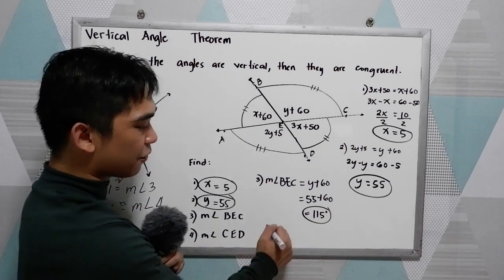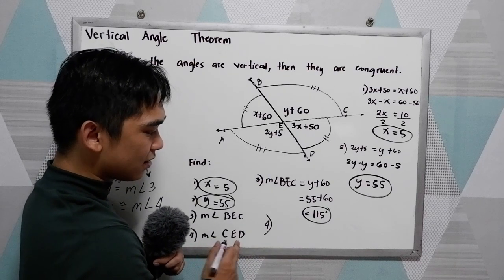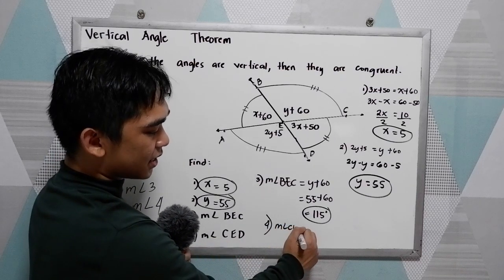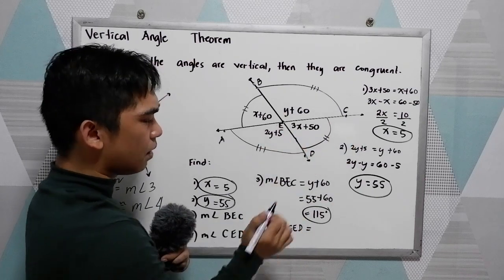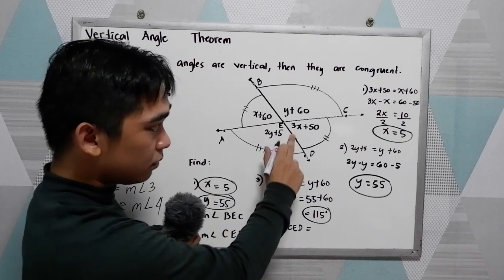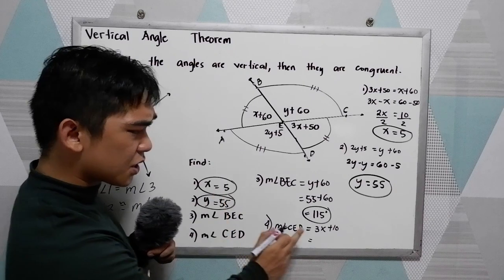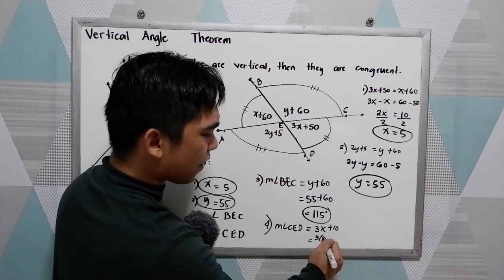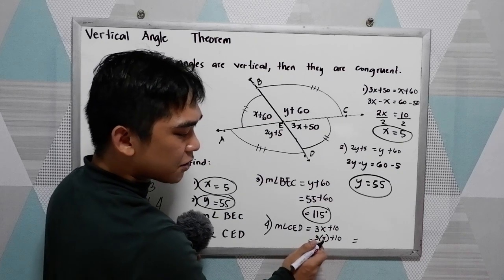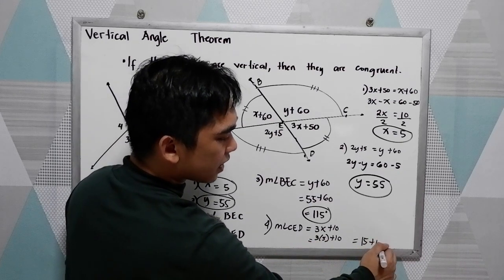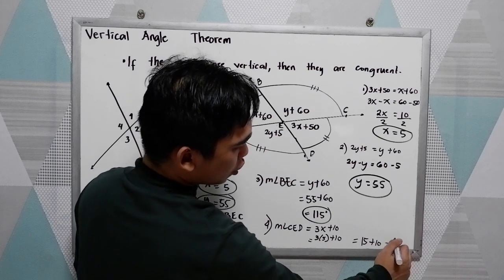Number 4, find measure angle CED. Measure angle CED is 3x plus 10. We have a value for x, which is 5. So, 3 times 5 plus 10. We have 3 times 5, 15 plus 10, that is 25.